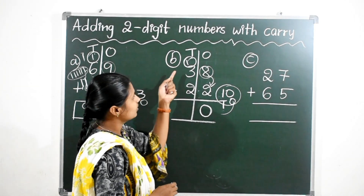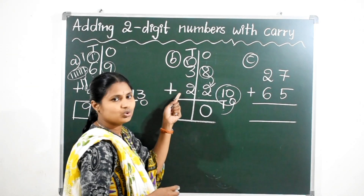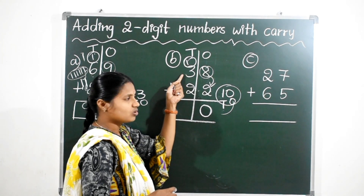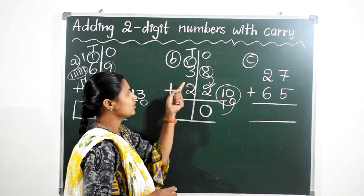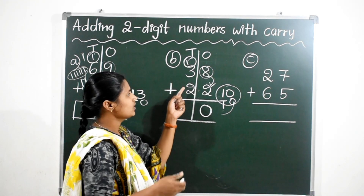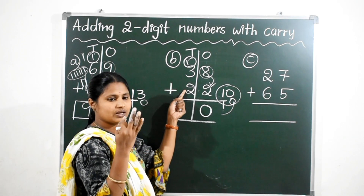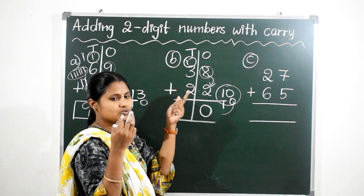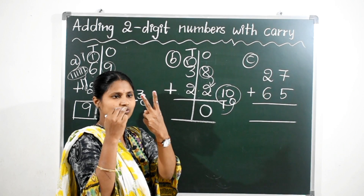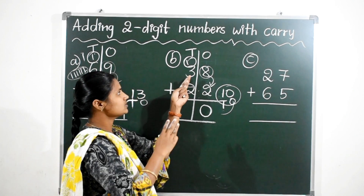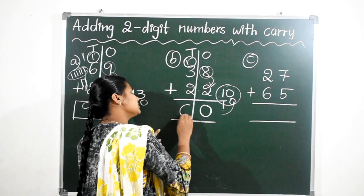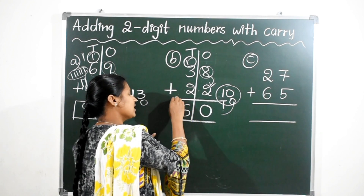Now add 1, 3, and 2. 1 plus 3 is 4; 4 plus 2 is 6. Or: 3 plus 2 is 5; 5 plus this 1 is 6. So the answer is 60.